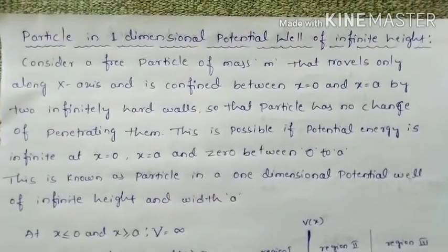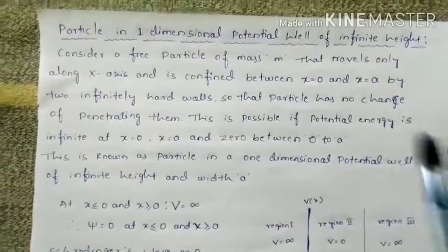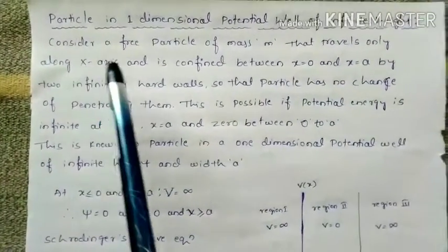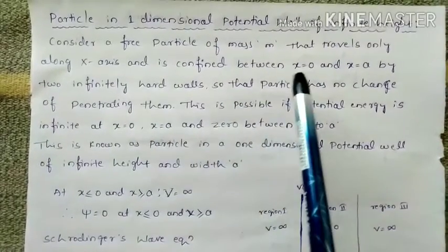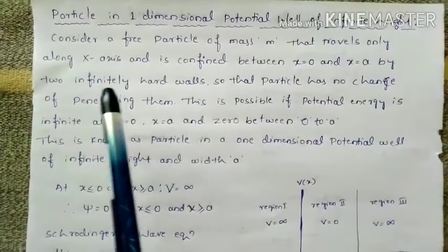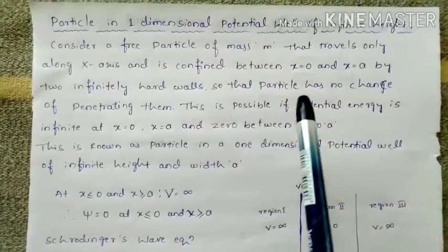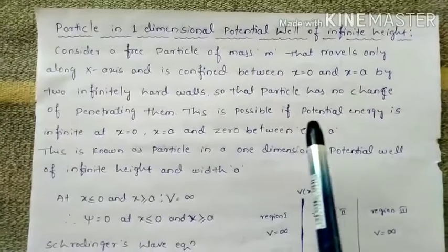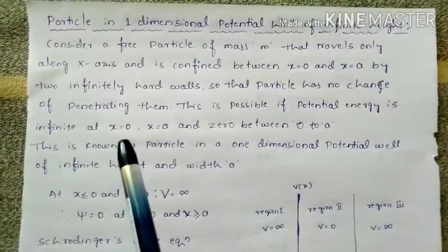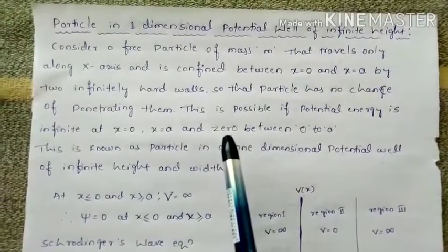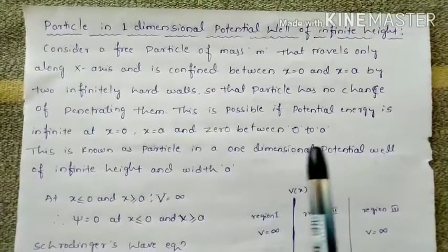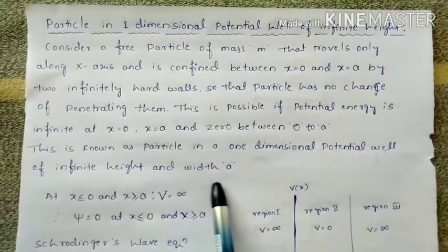Hello dear students, today we will discuss particle in one dimensional potential well of infinite height. Let us consider a free particle of mass that travels only along the x-axis and is confined between x equals 0 and x equals A by two infinitely hard walls, so the particle has no chance of penetrating them. This is possible if potential energy is infinite at x equals 0 and x equals A, and the potential energy is 0 between 0 to A. This is known as a particle in a one dimensional potential well of infinite height and width A.